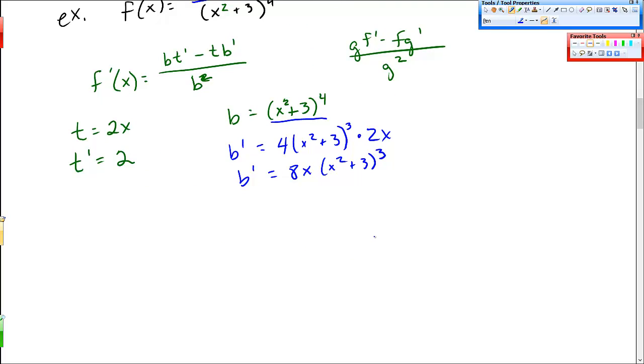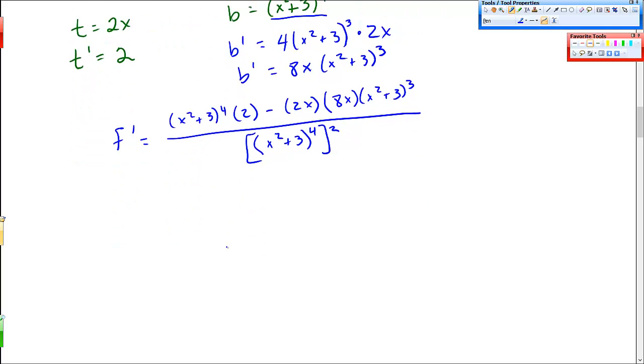And then I'm going to put it back together. So this breaking down and then putting it back together. So f prime, the bottom, x squared plus 3 to the fourth times the derivative of the top, which is just 2, minus 2x times the derivative of the bottom, which is 8x, x squared plus 3 cubed, all over x squared plus 3 to the fourth. And then that's all squared. I think that's what I get.